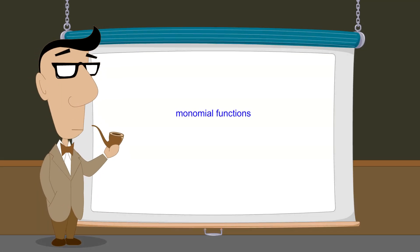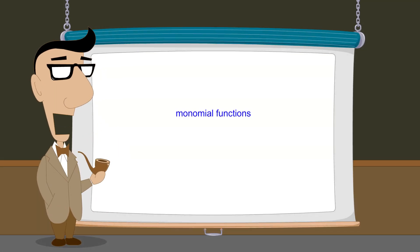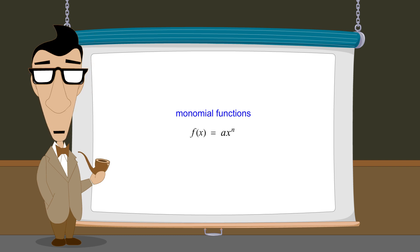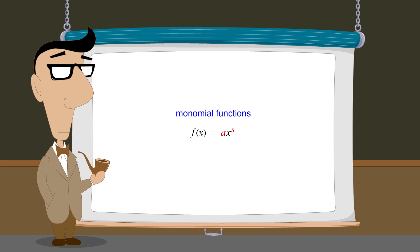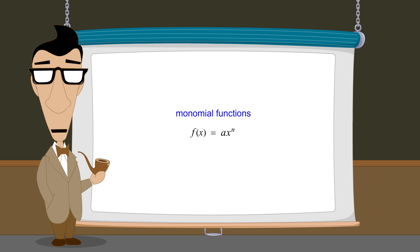So far, we have examined the graphs of monomial functions of a single real variable x, and saw how the shapes of these graphs are affected by the variable's exponent and its coefficient. In the next lecture, we will see how these monomial functions can combine to produce the interesting and varied graphs of polynomial functions.